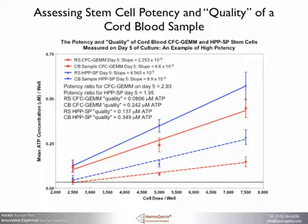Namely, the potency ratio for both stem cell populations must be similar to or greater than that of the reference standard. The second release criterion concerns stem cell potency or proliferation ability, which is measured at a specific cell dose — in this case 500,000 cells per well. The horizontal black line represents the ATP concentration at 0.04 micromolar. This is the level above which cells can sustain proliferation. Since the stem cells for both the reference standard and the sample exhibit an ATP concentration greater than 0.04 micromolar, the second criterion for release has been fulfilled.